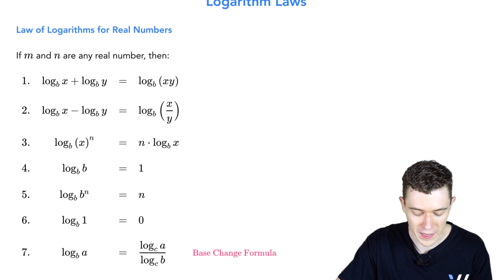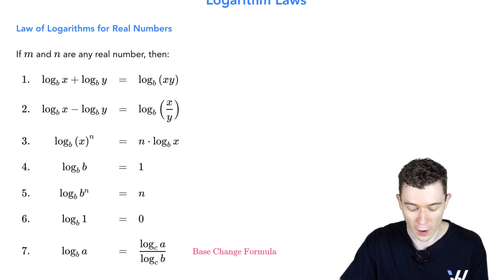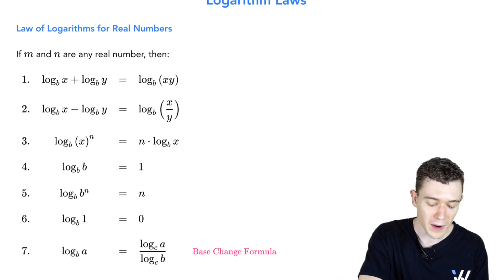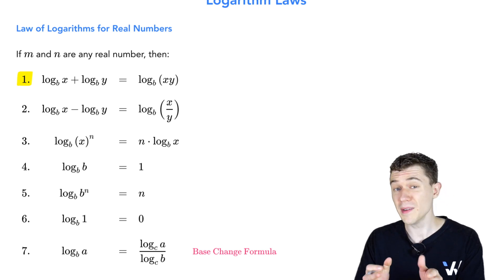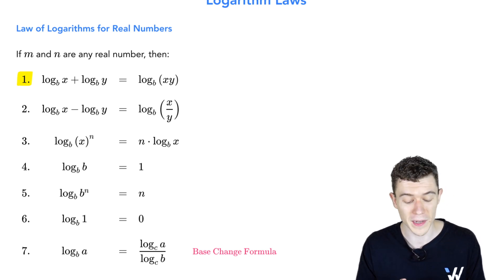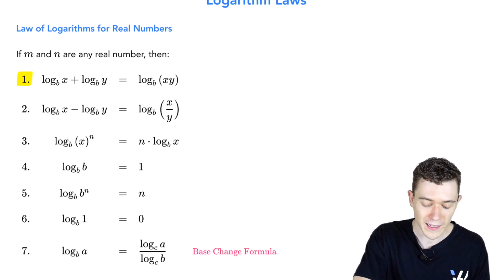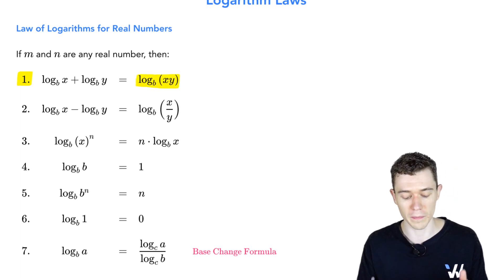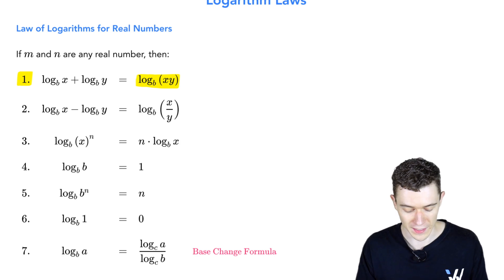We're letting m and n be any real numbers, the following hold true. If we're adding logarithms, notice they're the same base. They're both log base b. Log base b of x plus log base b of y. That's the same as a single logarithm base b of x times y. In other words, when we're adding logarithms, we can write it as a single logarithm, multiplying the insides.